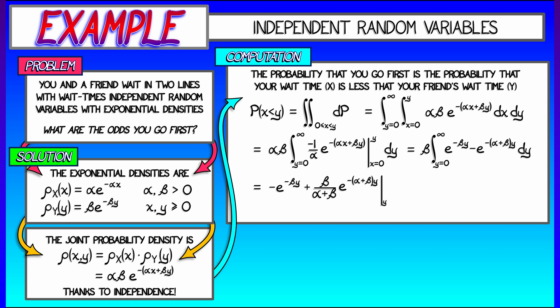Integrating that with respect to y, doing a little bit of algebra gives me a minus e to the minus βy plus β over quantity (α + β) times e to the minus quantity (α + β)y. I evaluate that as y goes from zero to infinity, and with a little bit of simplification, I get 1 minus β over (α + β), which in the end is α over (α + β).